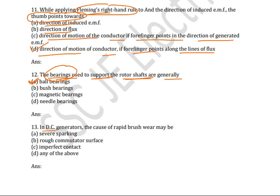Next question: in DC generators, the cause of rapid brush wear may be due to severe sparking, rough commutator surface, imperfect contact, or any of the above. If you know the answer, comment below. The correct answer is any of the above — severe sparking, rough commutator surface, and imperfect contact can all cause rapid brush wear in a DC generator.